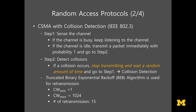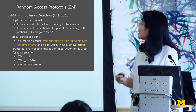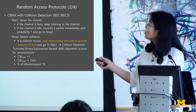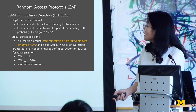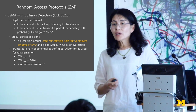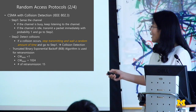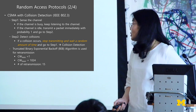It's the same thing: first you sense the channel. If the channel is busy, keep listening. If the channel becomes idle, transmit a packet immediately with probability 1, then go to step 2. But if a collision is detected, stop transmitting and wait a random amount of time. At that time, this random amount of time was calculated from the truncated binary exponential backoff algorithm.